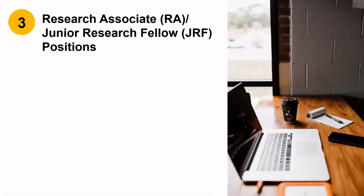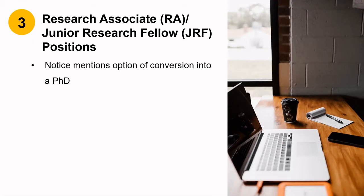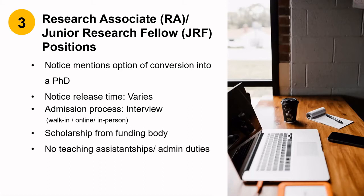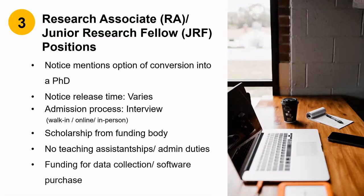Type 3: research associate or junior research fellow positions. This is a special category in which a notice for these positions specifically mentions the option of conversion into a PhD program. Not all RA or JRF positions offer PhD conversions — only the ones where it is explicitly mentioned. Notice time varies. Usually the selection is on the basis of an interview if you are shortlisted based on your profile; only in a few cases is a written test required. Scholarship is from the project. There are no teaching assistantship or administration duties, but the candidate is expected to work on the project and their PhD simultaneously. Generally, the project also provides funds for data collection or software purchases.